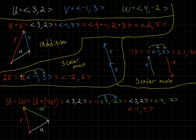For scalar multiplication, you distribute the scalar — it scales the vector. Here we had vector v, and when we multiplied by 2, we scaled it by a factor of 2 making it bigger. If you wanted to make it smaller, you could divide by 2 or multiply by one-half to scale it down. You can also multiply by negative numbers — when you multiply by a negative number, it reflects the vector. You can mix these: multiplying by negative 2 would reflect the vector and make it twice as big.